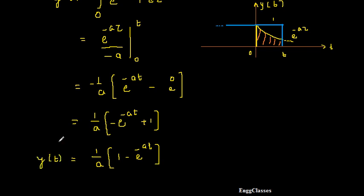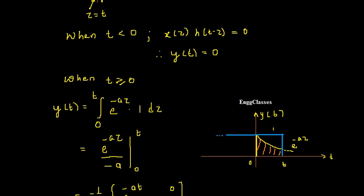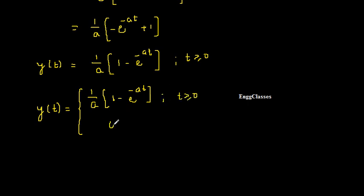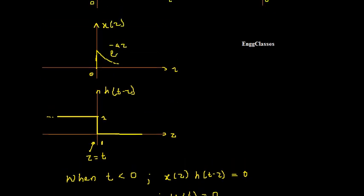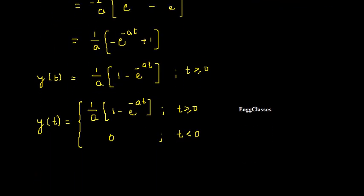So the final answer for y(t) takes two values: y(t) = (1/a)[1 − e^(-at)] for t ≥ 0, and y(t) = 0 for t < 0. This is the complete convolution integral result for these two signals. I hope you understood — if you have any doubts, please let me know in the comment section. Subscribe to NG Classes for more videos on signals and systems. Thank you for watching.